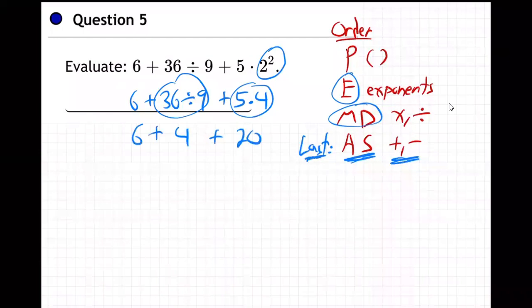Right? And then last. Last. Now do your adding and subtracting. Comes out 30. Okay? So be careful. Make sure you do adding, subtracting last. That's the order of operations.